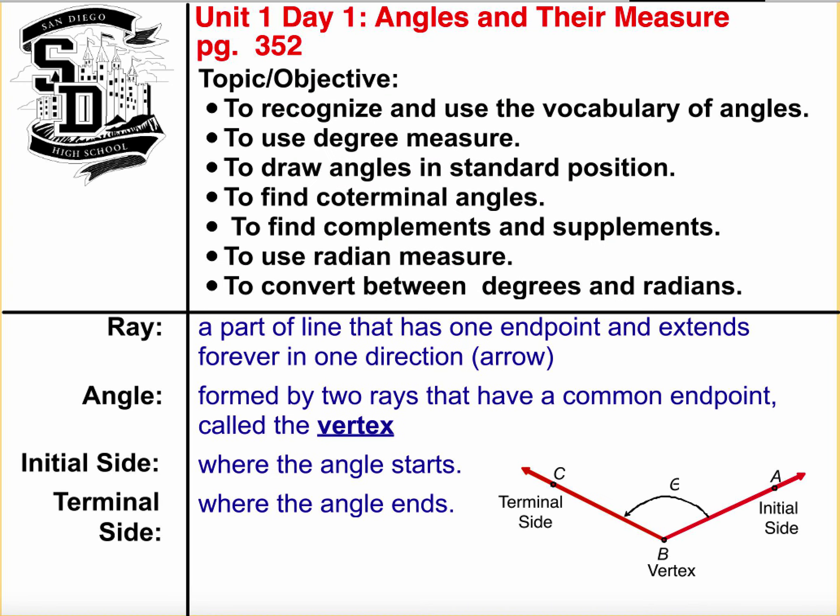So this is our first in several days of notes that you're going to be taking on angles in this unit. So we've got a little bit of a goal today. We're going to talk about angles. We're going to use the degree measure. We're going to draw angles in standard position. We're going to find coterminal angles, complements, and supplements. And we're going to use radian measure and try and convert between degrees and radians. It's a lot. So I'm going to front load you with some vocabulary. Hopefully a lot of this is review.